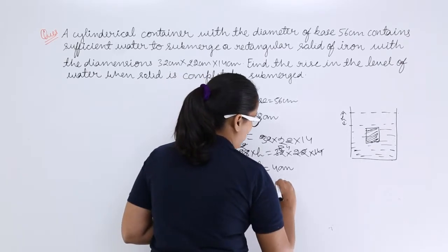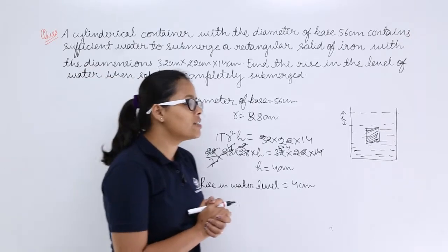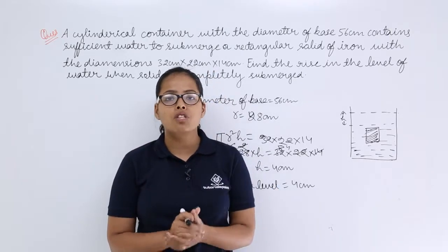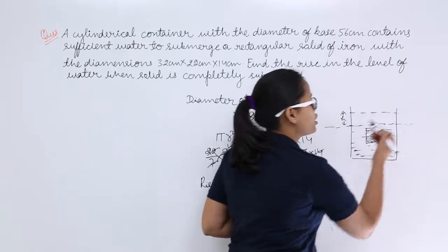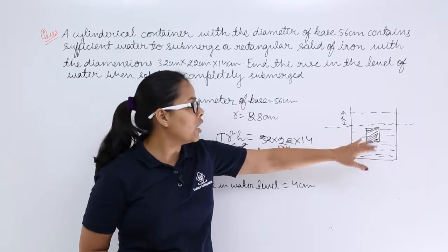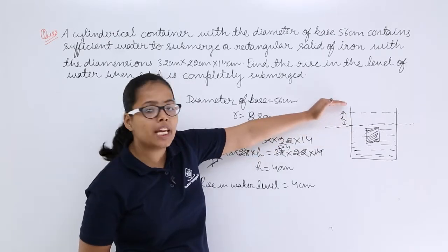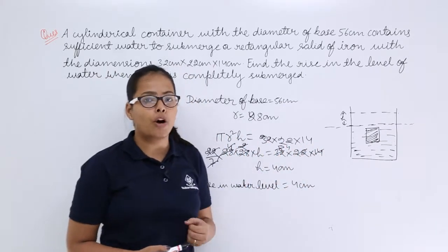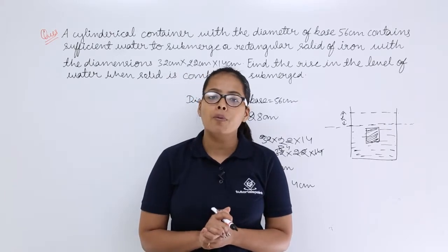The rise in water level in the cylindrical vessel is 4 centimeters. To recap: they are submerging a cuboid in a cylindrical vessel containing sufficient water. The original water level rises when the cuboid is submerged because the cuboid occupies volume. That volume converts into a rise in the water level, which is why we equate the volume of the water rise to the volume of the cuboid. That's how you calculate the water level rise. I hope there's no doubt — I'll be taking more problems in the coming video lectures. Thank you.